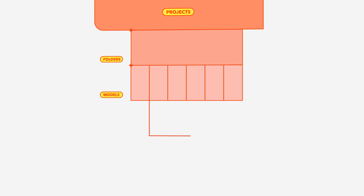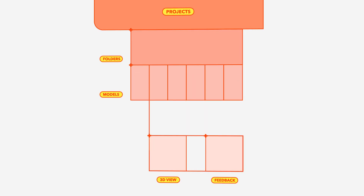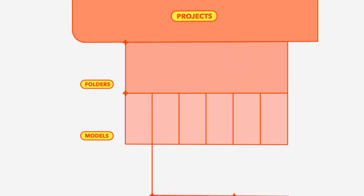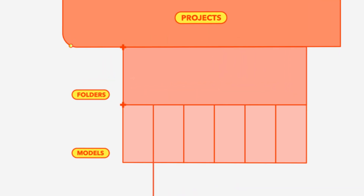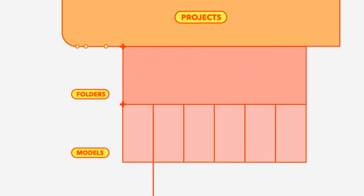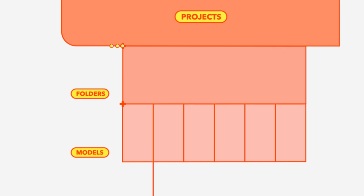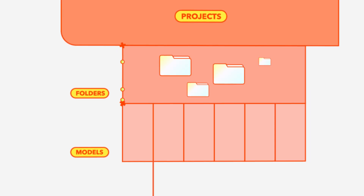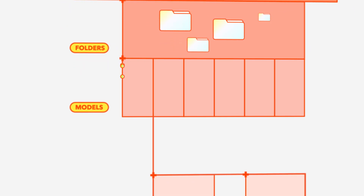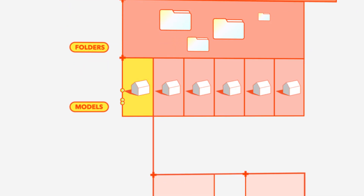First, let's take a look at how your files are structured in Modelo. When you log in, you'll see a list of your projects. Inside each project are your folders, and those are where you'll find your models.